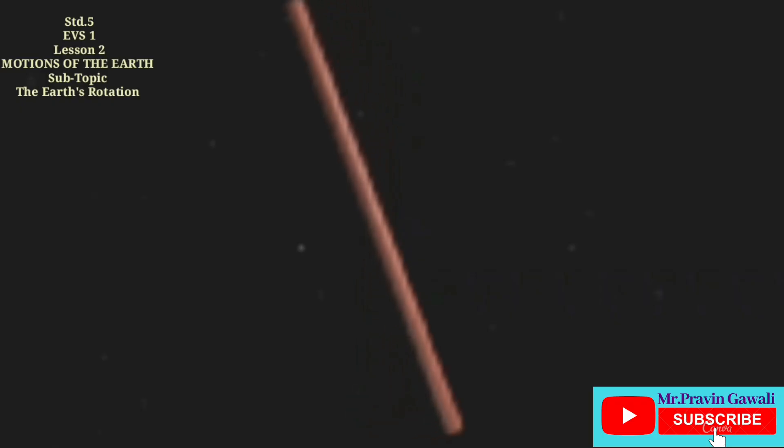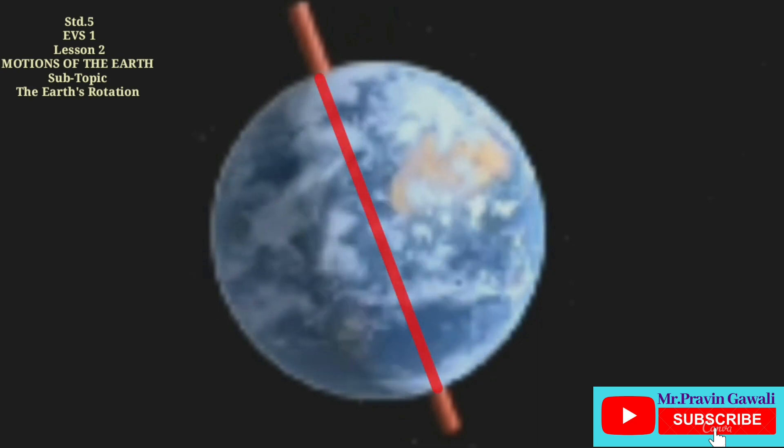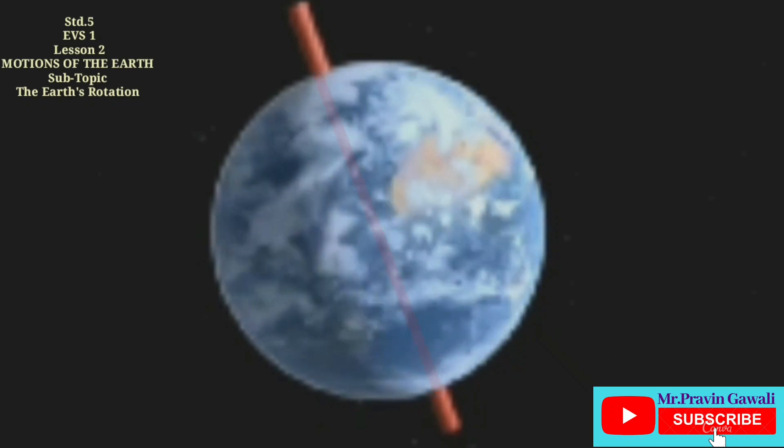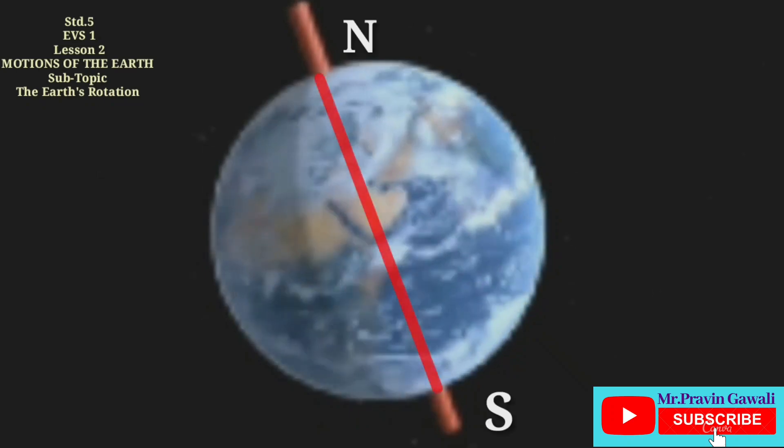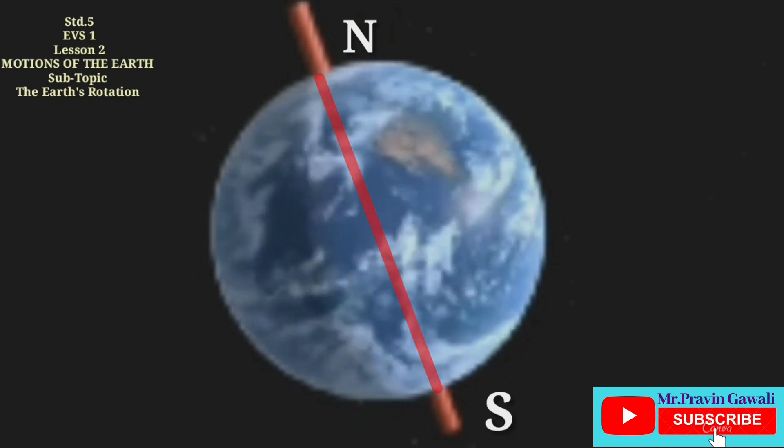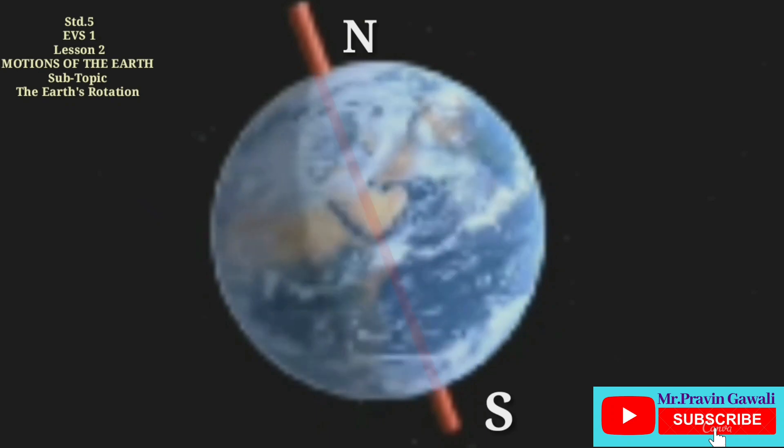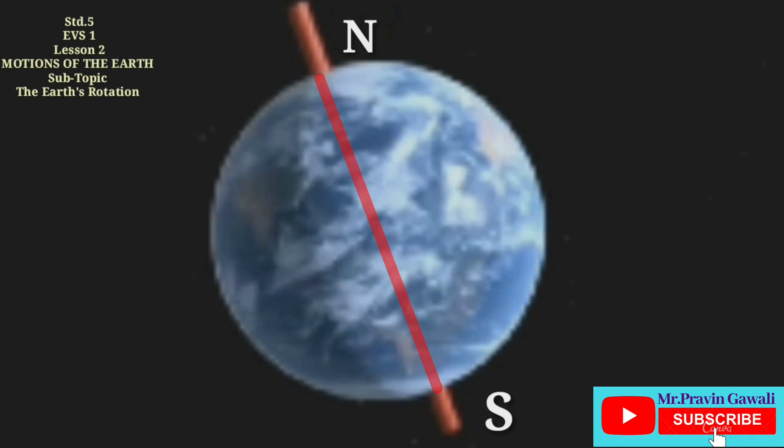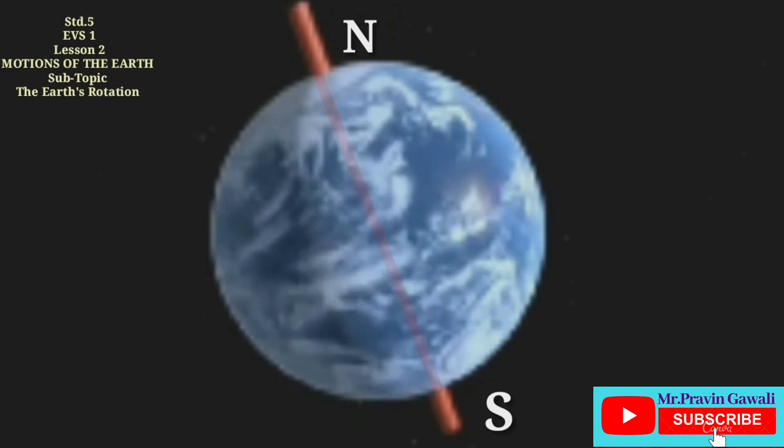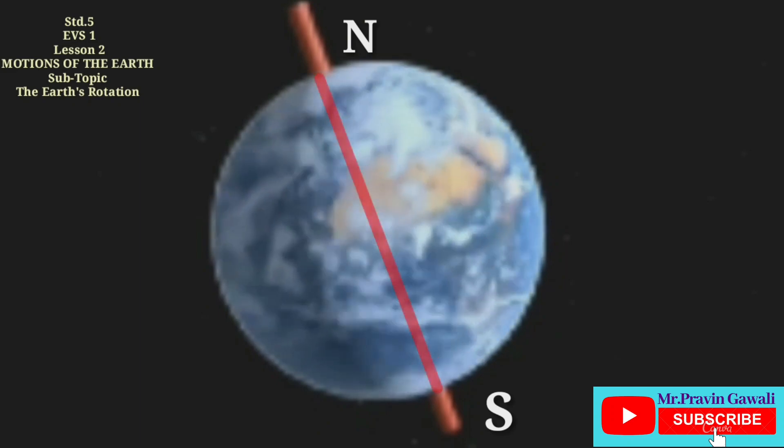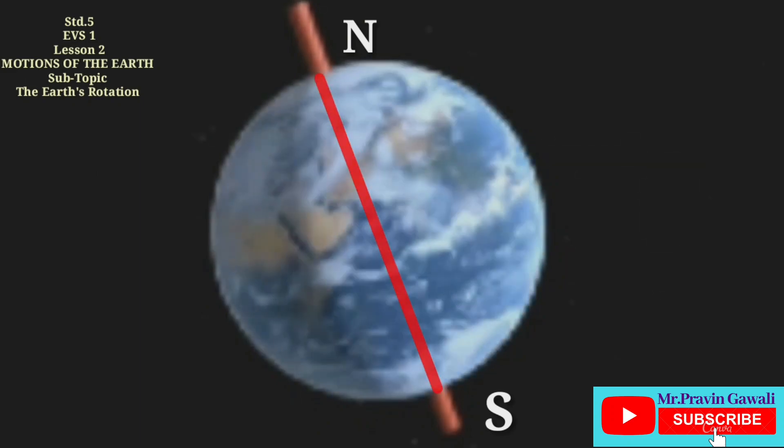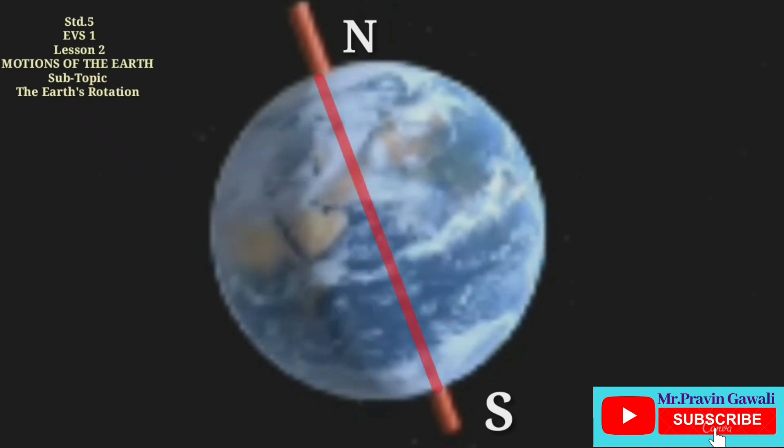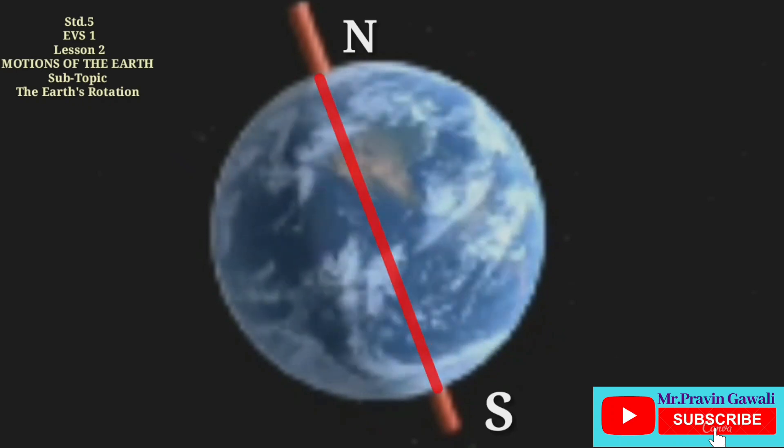Now we shall study the rotation of Earth. We know that our Earth rotates along its own axis. Axis is an imaginary line that passes through the center of the Earth and meets on the two poles, the North Pole and South Pole. Take a globe and rotate it from the west side. The Earth is rotating itself along with its axis.